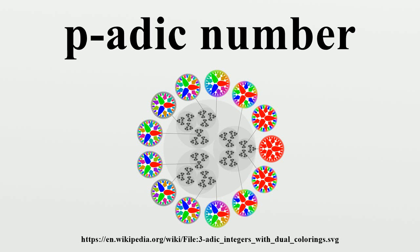In the algebraic approach, we first define the ring of p-adic integers, and then construct the field of fractions of this ring to get the field of p-adic numbers. We start with the inverse limit of the rings Z/p^n Z. A p-adic integer is then a sequence (a_n) such that a_n is in Z/p^n Z, and if n ≤ m, then a_n ≡ a_m (mod p^n). Every natural number m defines such a sequence by a_n = m mod p^n and can therefore be regarded as a p-adic integer.